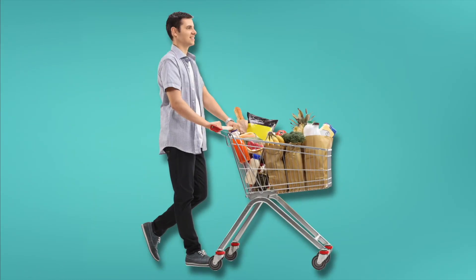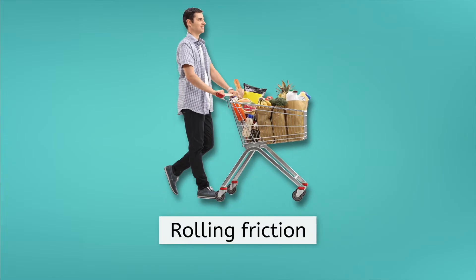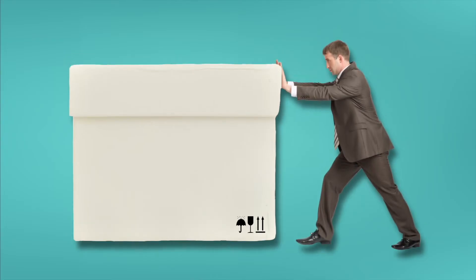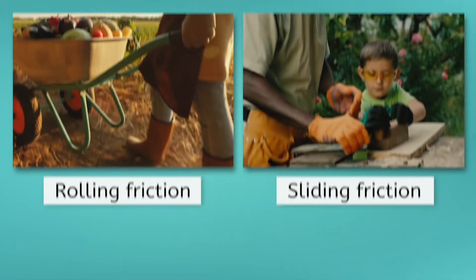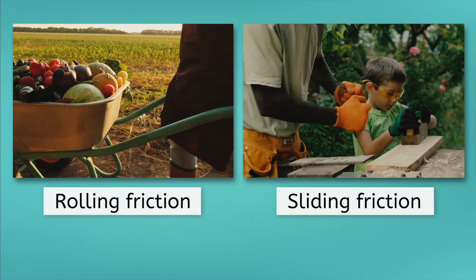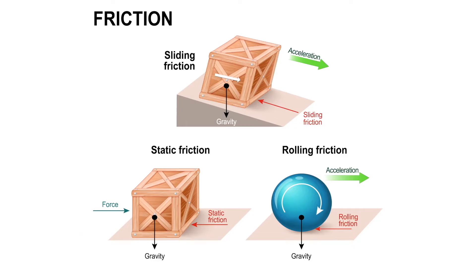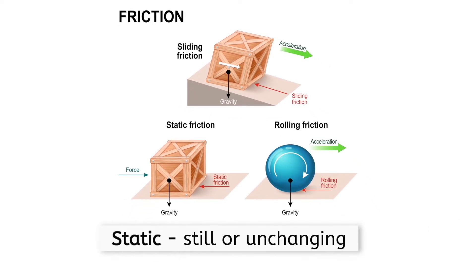Of course, not all types of friction are the same. Our man pushing the grocery cart is experiencing a type of friction known as rolling friction. Why do you think we put wheels on shopping carts? Because it's easier to push something on wheels. Trying to slide a large box would be far more work, because you could encounter more friction. This is because rolling friction is always less than sliding friction. A third type of friction, known as static friction, exists on objects that have not begun moving yet. Note that the word static always means still or unchanging.